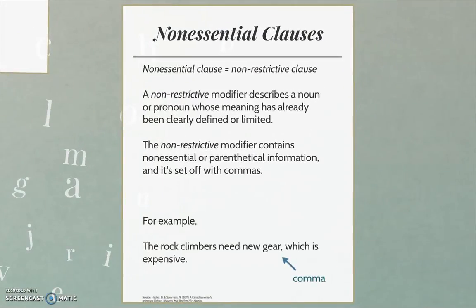Clauses can also be non-essential. This type of clause is called a non-restrictive clause. A non-restrictive modifier describes a noun or pronoun whose meaning has already been clearly defined or limited, and contains non-essential or parenthetical information. Think of it this way: the non-essential clause is an aside or additional information. A non-restrictive modifier is set off with commas.